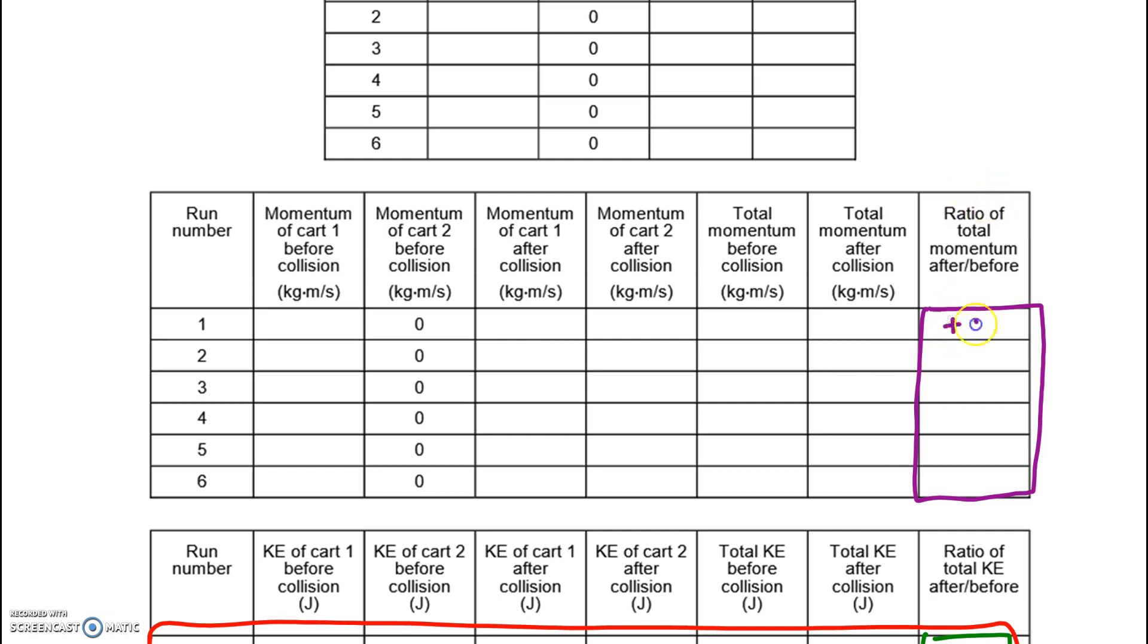Because if you get a value like positive 95 or negative 63.2, those suggest momentum was not conserved. Only a special value here would suggest momentum was conserved. And it's up to you to remember and think through what was the value, the special value. So if you see that special value, then,